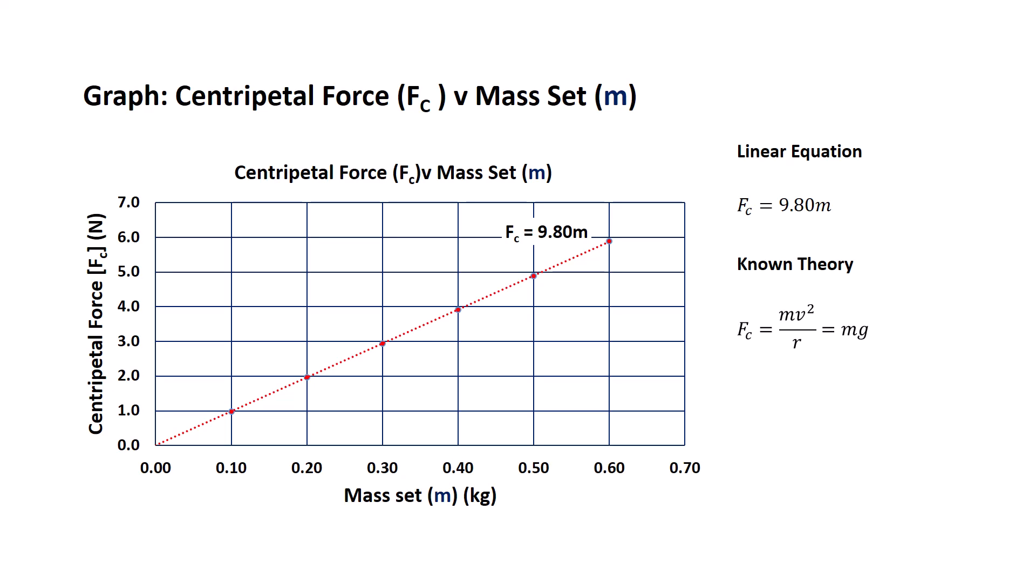From our theory we know centripetal force classically is equal to mv squared on r, but in this scenario it's being generated by the mass set which has a force due to gravity of mg. Now in this context the little m represents the mass of the mass set, so let's use that equation. We can rearrange that to say that the centripetal force is equal to g times m, and there's benefits for that which we'll examine shortly.